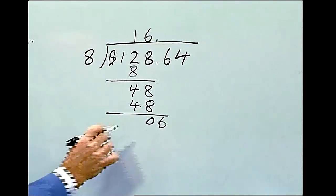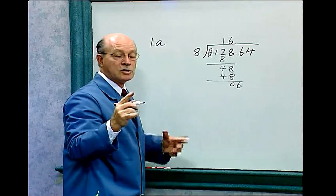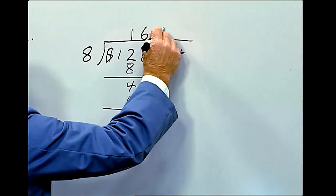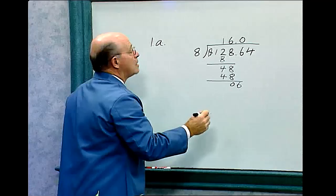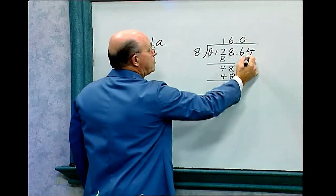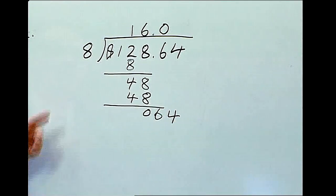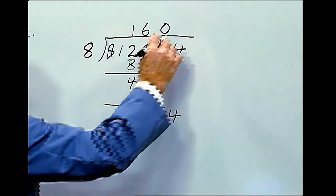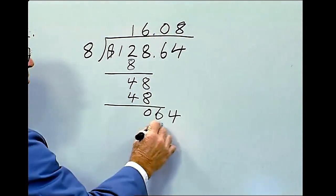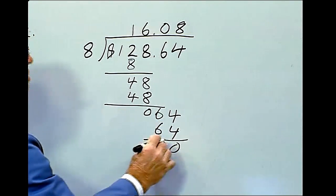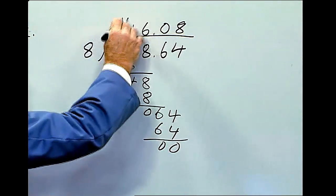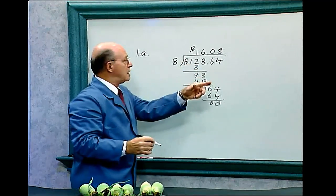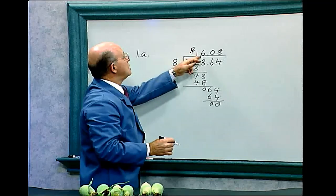Bring down the six. How many times does eight go into six? This is very important — it doesn't go, so we have to put a zero. Don't forget the zero — it's very important. Then we bring down the four. Eight goes into sixty-four eight times — eight times eight is sixty-four. That equals zero. So eight goes into $128.64 and the answer is sixteen dollars and eight cents.